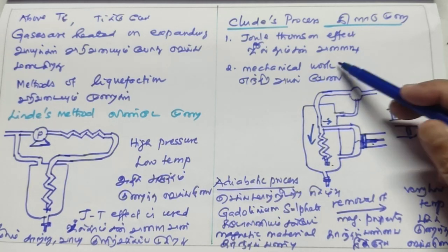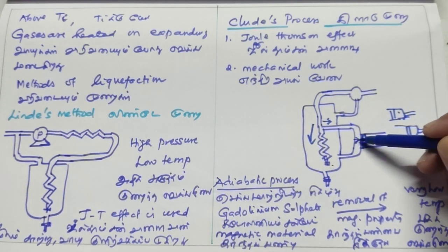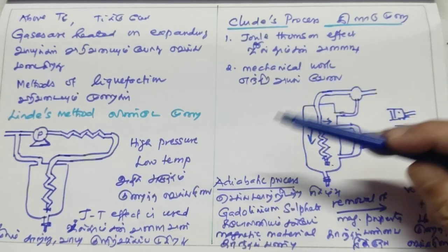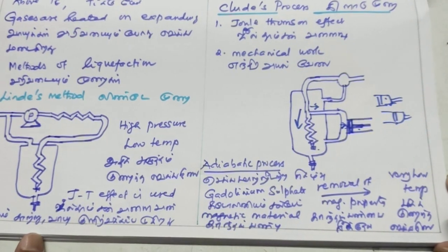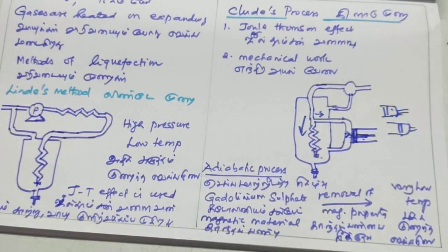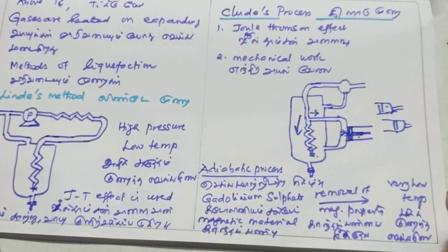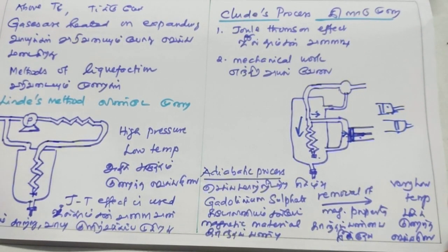Work is done by pressure-volume change. The gas will undergo energy change due to the current volume change. The Joule-Thomson effect involves a cooling process. This is an adiabatic process — heat cannot enter into the system or leave the system.